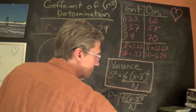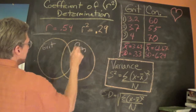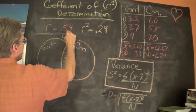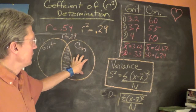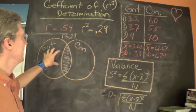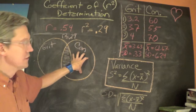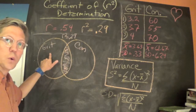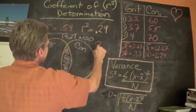This is typically depicted in a Venn diagram — one circle being grit and the other being conscientiousness. The proportion of shared variance, shown by the overlap, is r² = 0.29. Essentially, by knowing what students scored on the conscientiousness scale, we have 29% of the information needed to predict what they would score on the grit scale. We multiply r² by 100 to express this as a percent — 29%.